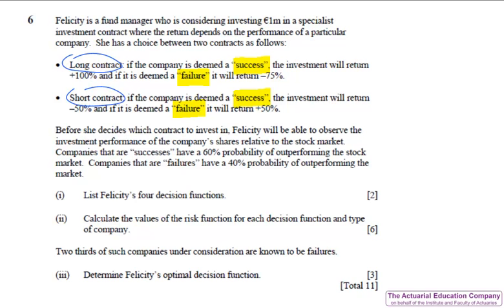But then it talks about we're observing the investment performance of the company's shares relative to the stock market for a whole year and it mentions companies outperforming and presumably underperforming depending on whether the state of nature is a success or a failure. So the outperformance or underperformance must be the results we observe if you like in our experiment. And so our four decision functions you'll recall are not based on the states of nature but are based on our experimental results. In this case outperforming or underperforming. Once you've got this the rest of the question was fairly easy.